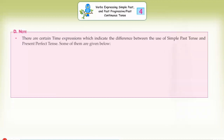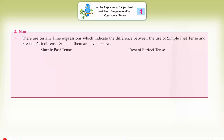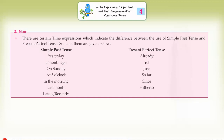Note: there are certain time expressions which indicate the difference between the use of simple past tense and present perfect tense. Simple past tense expressions include: yesterday, a month ago, on Sunday, at 5 o'clock, in the morning, last month, lately. Present perfect tense expressions include: already, yet, just, so far, since, hitherto, recently.